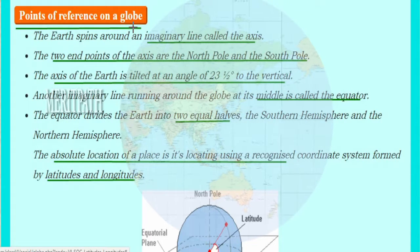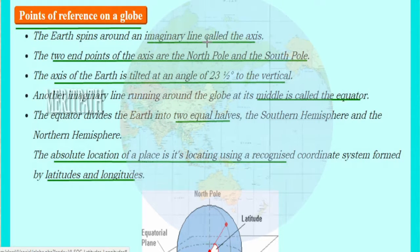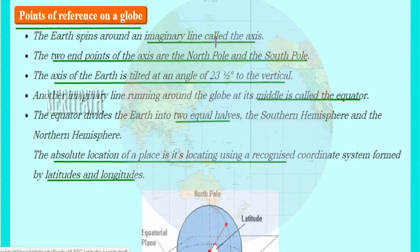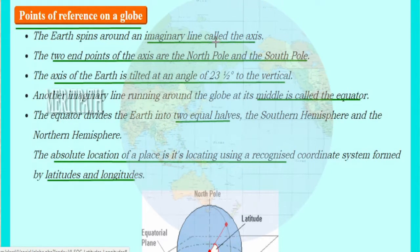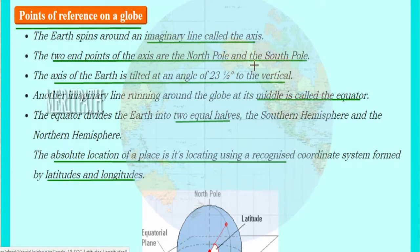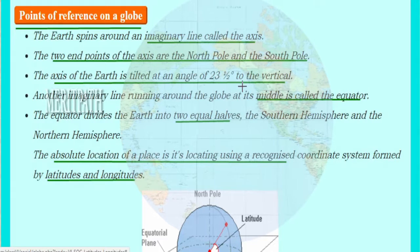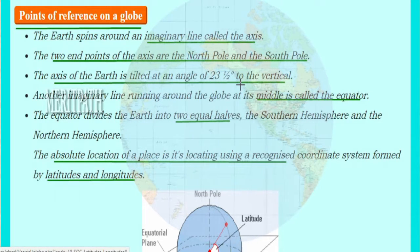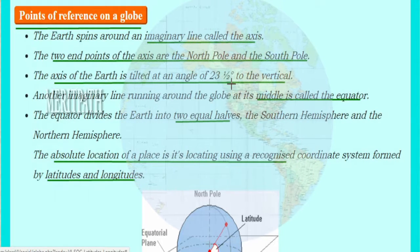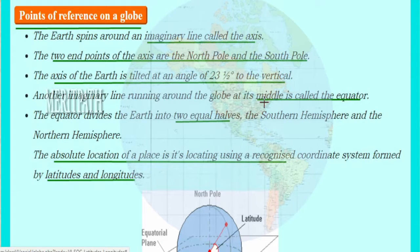There are points of reference on a globe. The globe spins on an imaginary axis — an imaginary line. The earth rotates around itself on this imaginary line known as the axis. This axis has two ends, known as the North Pole and South Pole. The axis is not straight; it is always tilted at an angle of 23.5 degrees towards the vertical.